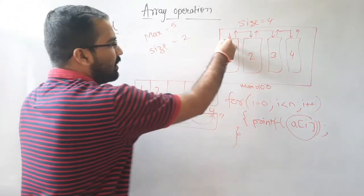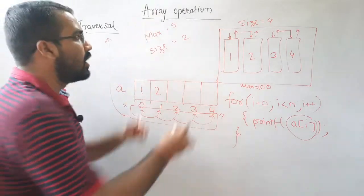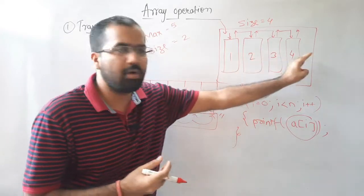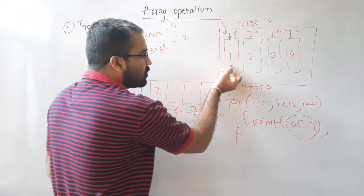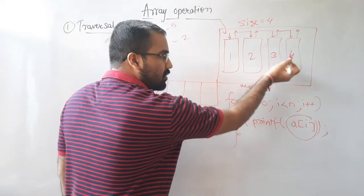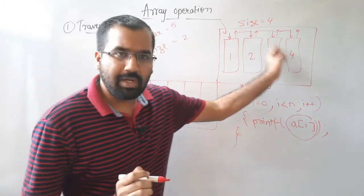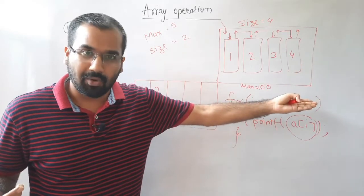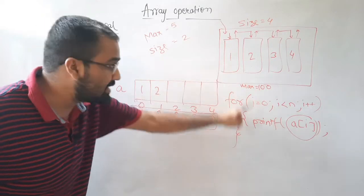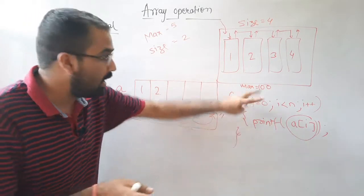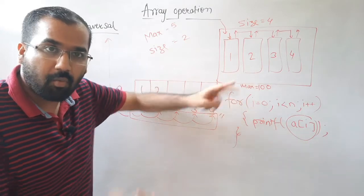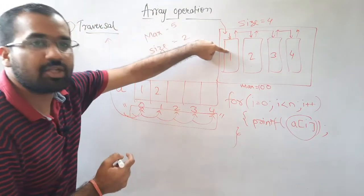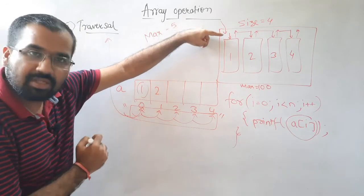If you are coming to this land to distribute sweets to the houses, you will go to house one, two, three, and four and give sweets. But will you go to house number five? No — because there is no house number five yet constructed on this land. In this analogy, giving sweets is nothing but printing the element.